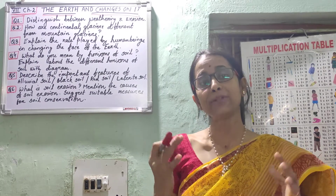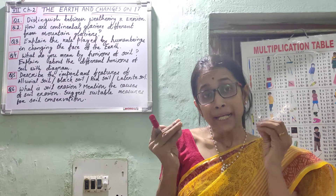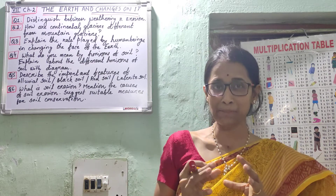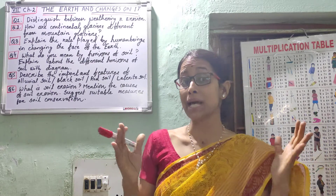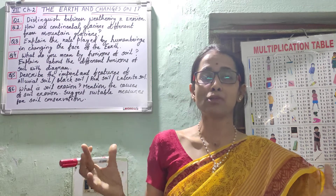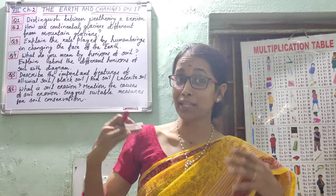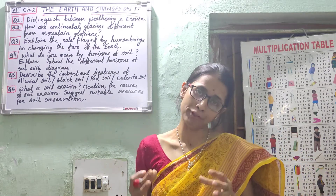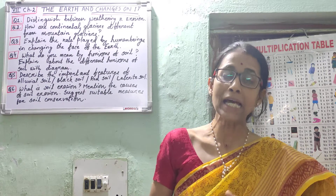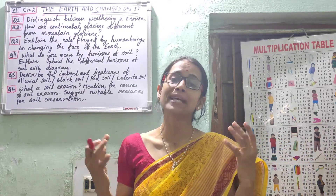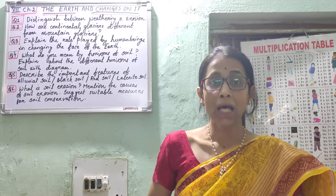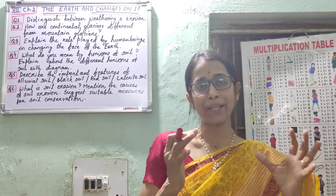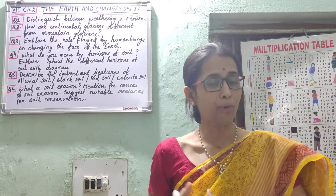For the second point, in weathering you can write: it takes place on account of weather changes, that means when rocks are exposed to different types of weather changes. In case of erosion, it takes place because of the action of natural agents of gradation like glaciers, running water, wind, etc. You can also write a third point: weathering does not involve transportation.